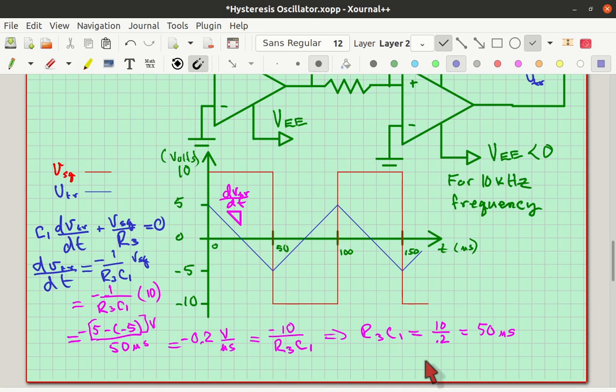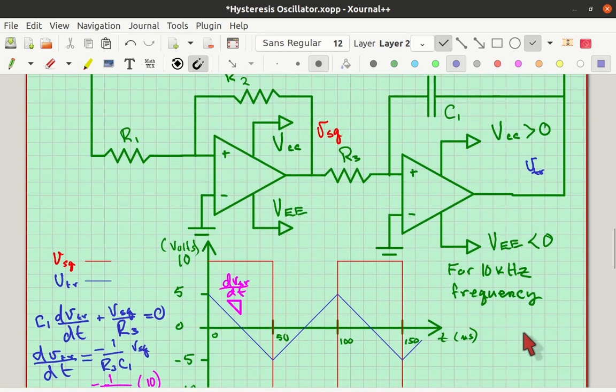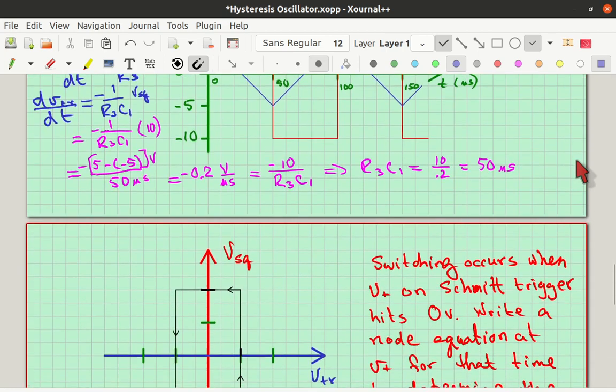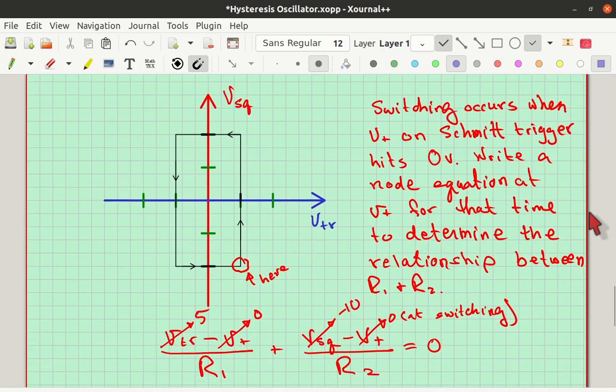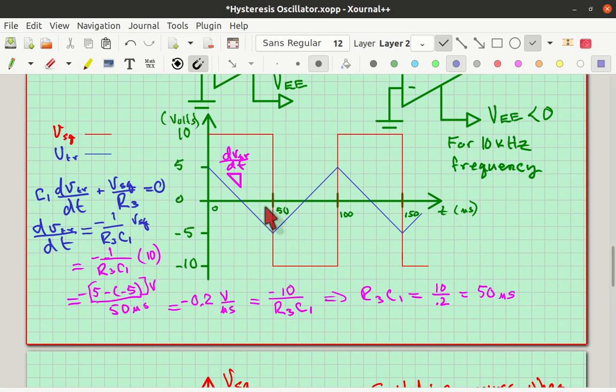So, you can use this equals that to solve for the rc product, and you get 50 microseconds. So, that's how you get the value for rc. You can pick the r here, that would be r3, or you could pick the c1 and solve for r3. Now, let's look at what happens.